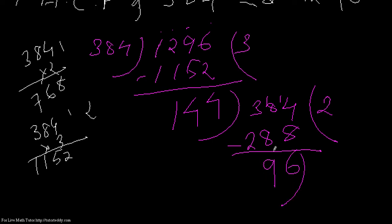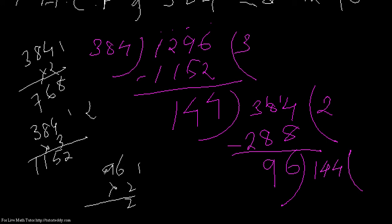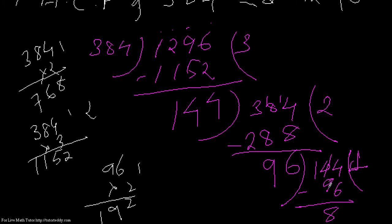Again, I take 96 as my next divisor and divide 144 by it. 96 into 2 is 192, which is greater than 144, so I take 96 into 1, which is 96. Subtracting 144 minus 96: 14 minus 6 gives 8, and the next digit gives 4. So the remainder is 48.